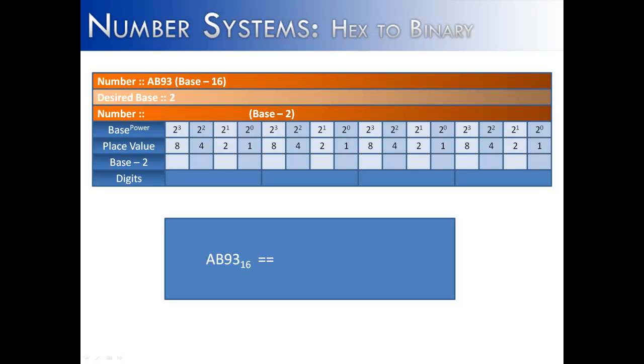What we're going to do is lay out the digits of base 16, which I have AB93 here, and we're going to put those in the bottom of our table here. Above each digit, what we've done is placed four columns.